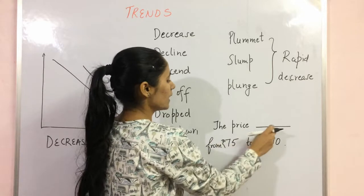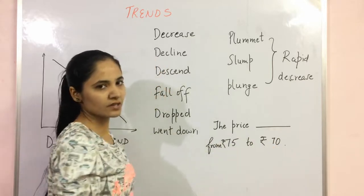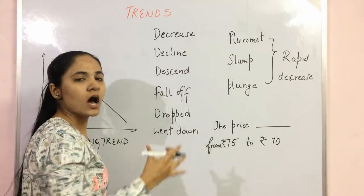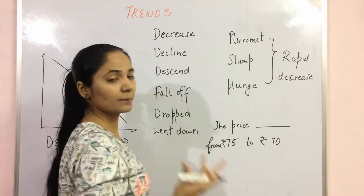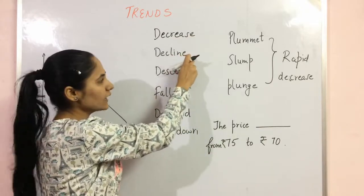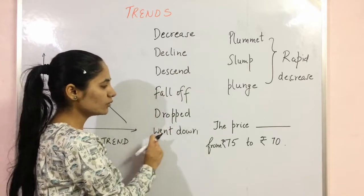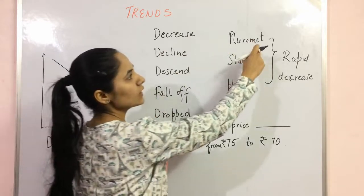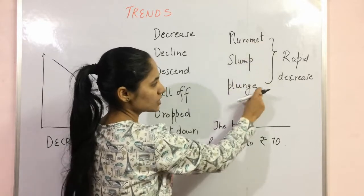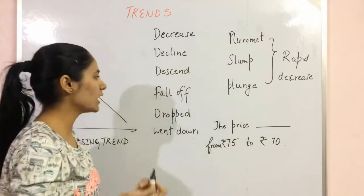For instance, if the price goes from 75 to 70, that is a basic difference of 5, so we use the general decrease words. Also, if your Task 1 is in the past tense, you add -ed or -d: decreased, declined, descended, fell off, dropped. 'Went down' is already in past form. Similarly, plummeted, slumped, plunged. So in past tense, just add -ed or -d to convert these words.